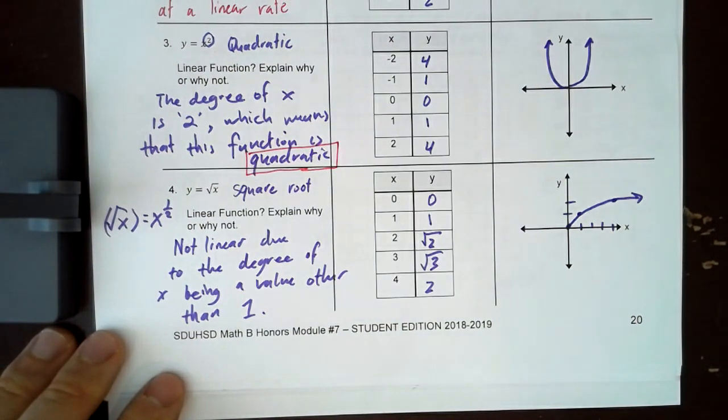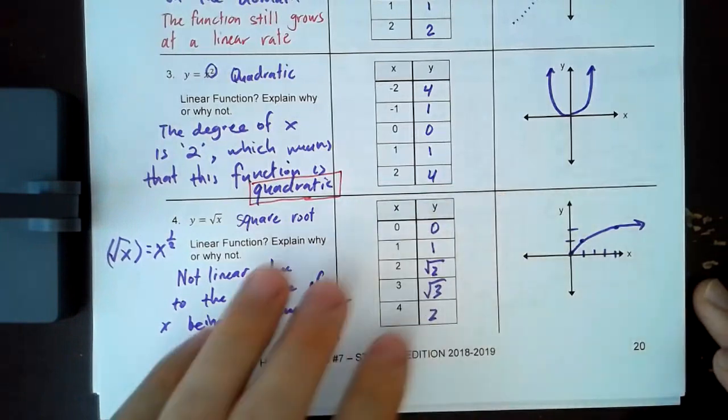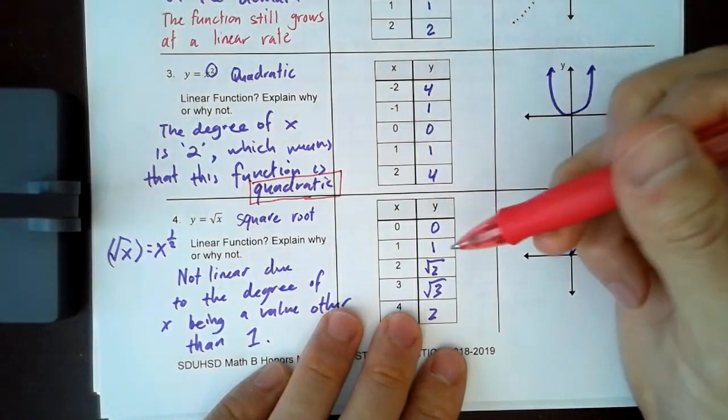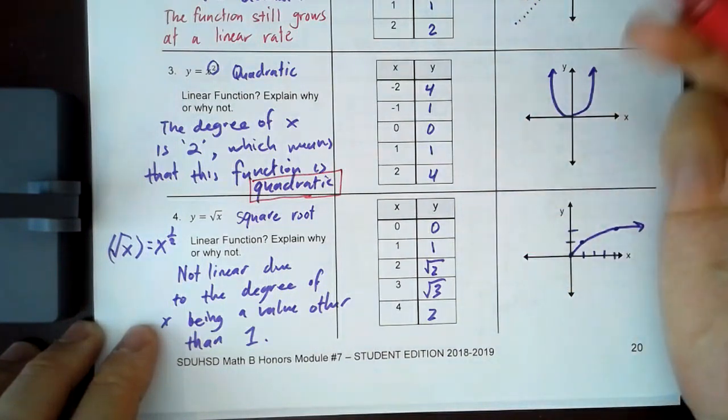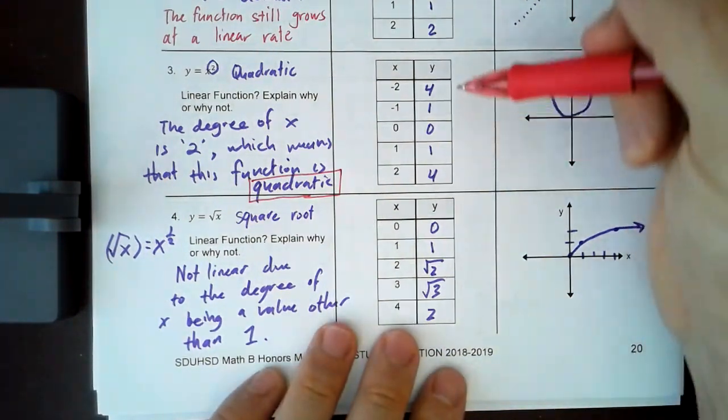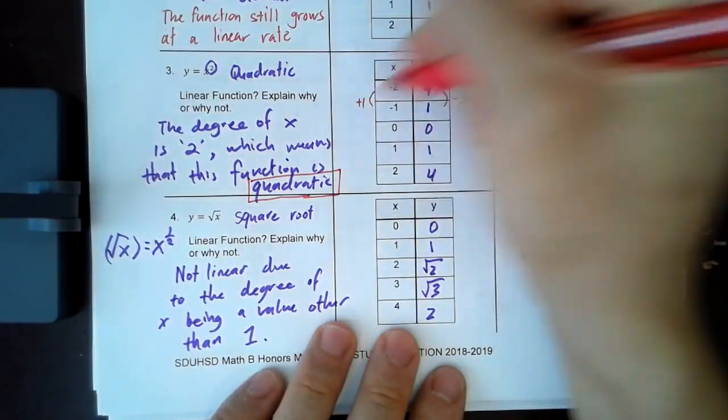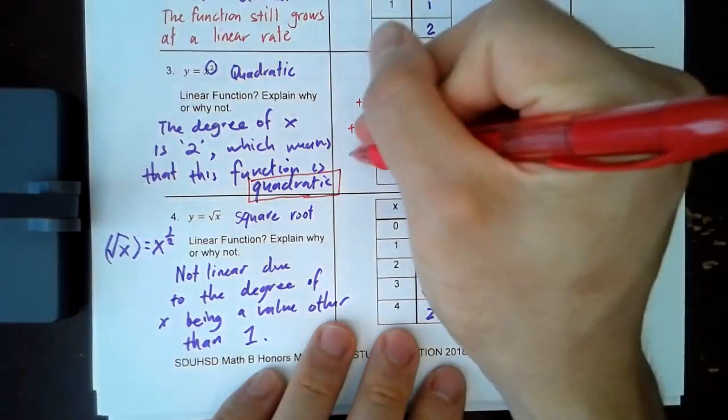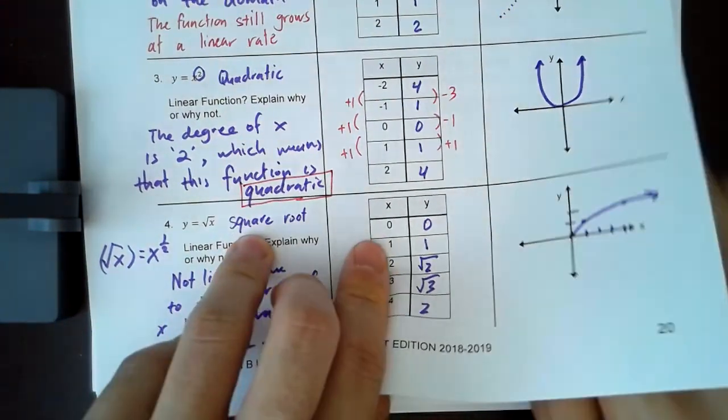So looking at the degree of x in terms of the function equation or the function rule is going to determine if something is linear or not. Obviously, the table of values can determine if something is linear as well. You just have to have a constant change in y divided by the change in x. So it has to be the same ratio every time. And you can see how in these two examples right here, the change in y is not consistent every time. So you already know that it's not linear. It's not growing at the same rate.